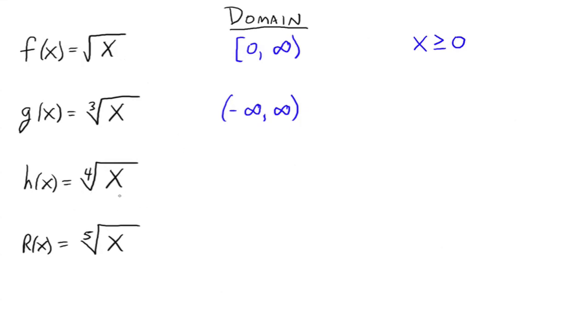What about the fourth root? Well, same idea. The fourth root of a negative number ends up being an imaginary number situation. So again, the domain is all real numbers greater than or equal to 0. And the fifth root, same idea as before. You can take the fifth root of a positive number or a negative number, and you'll always get a real number back.